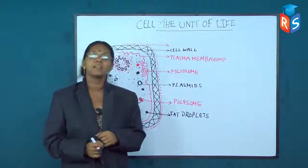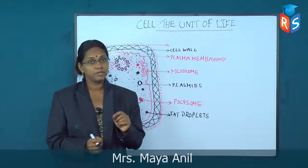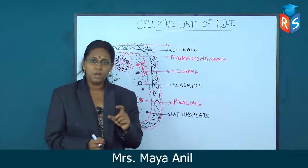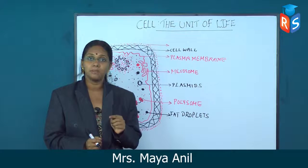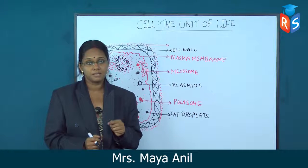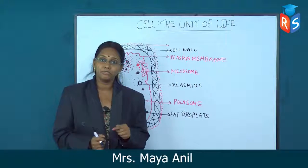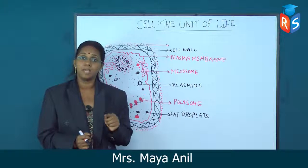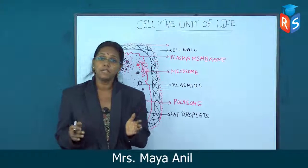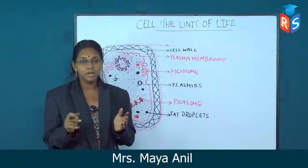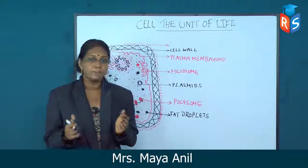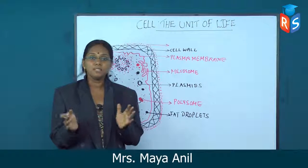Cells have different shapes and sizes. The smallest cell is that of Mycoplasma, which is only 0.3 micrometers in size, while the largest cell is that of an ostrich egg at about 7 centimeters. Cells also differ in shape — they can be polygonal, spherical, rectangular, elongated, or even branched.